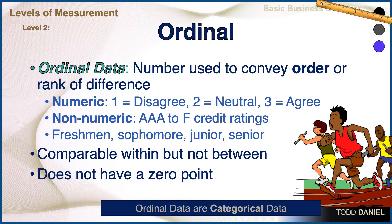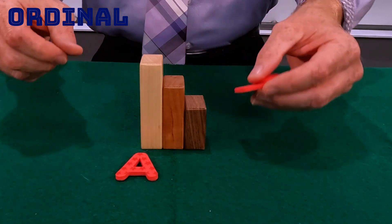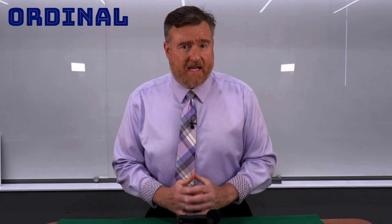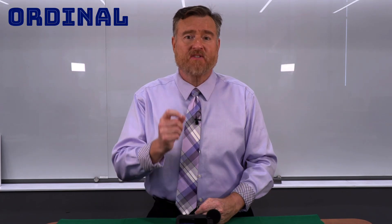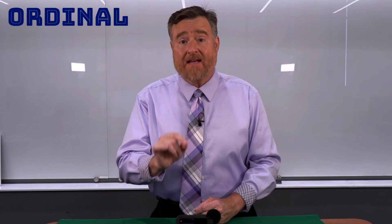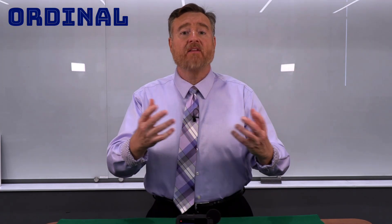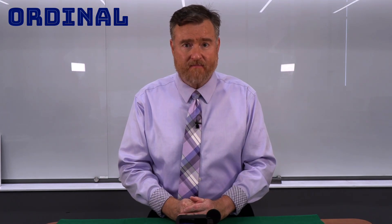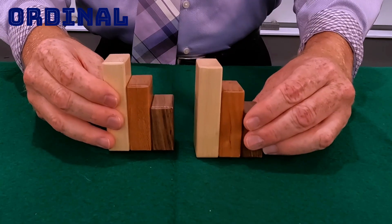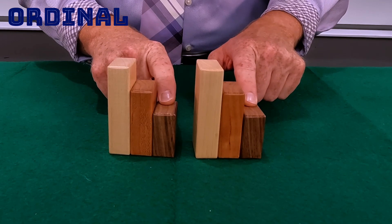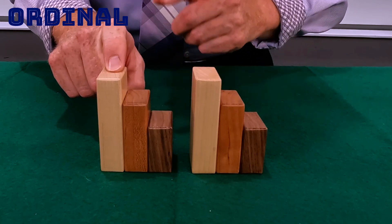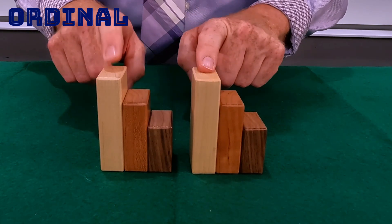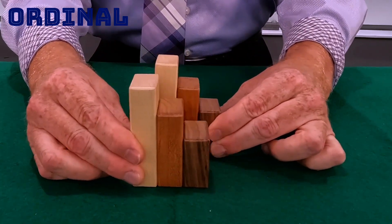Examples include AAA to F credit ratings, or complete words like freshman, sophomore, junior, senior. Like with nominal data, we could represent ordinal data with letters instead of numbers. Ordinal data are comparable within, but not between. The first place finisher in the race was the fastest runner, second place was second fastest — you can compare within the rankings. But you cannot compare between scales. Each time the race is run there is a first, second, and third place finisher, but that doesn't mean the first place finisher from this year was faster than the first place runner from last year. The order within will remain the same, but we cannot compare between data sets.